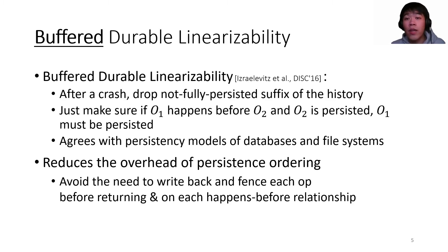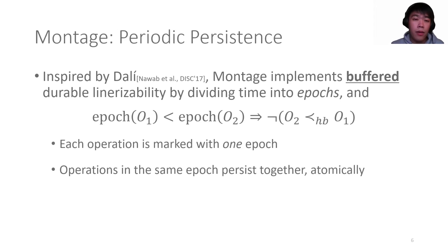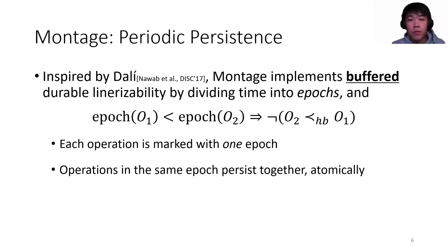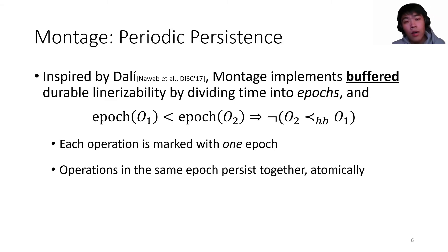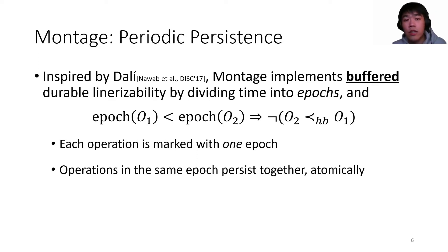This gives us the benefit that an operation can return without persisting, hence avoiding the need to wait for persistence on every operation. Inspired by Dali, the first practice of Buffered Durable Linearizability, Montage implements BDL by dividing an execution into epochs, which marks the persistence order of operations in batches. If two operations are ordered by epoch, they either do not have happens-before order or their happens-before order is consistent with epoch order. Montage makes sure that each operation is marked with only one epoch, and operations in the same epoch persist atomically together.